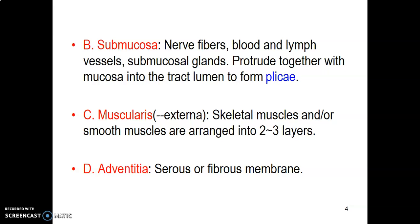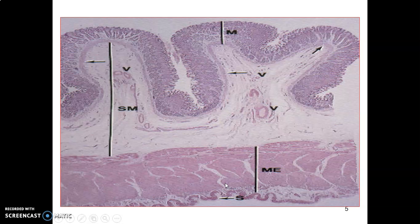The muscularis externa has smooth muscle cells arranged in inner circular and outer longitudinal layers. However, in the upper third of the esophagus there is skeletal muscle. In the stomach, there are three layers — circular, longitudinal, and oblique — because the stomach needs to churn food. Then we have the adventitia, the last layer covering the hollow GI, made up of serous membrane with simple squamous epithelium, representing the visceral peritoneum.